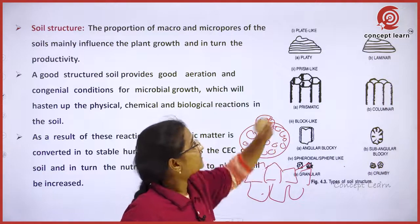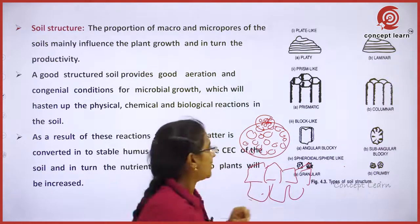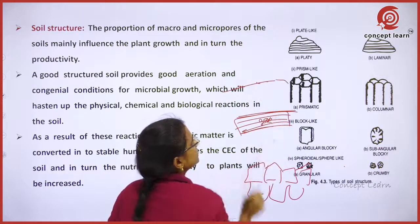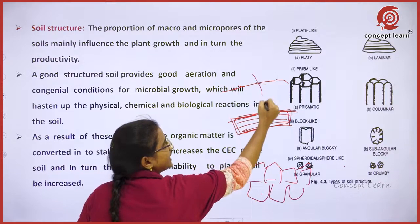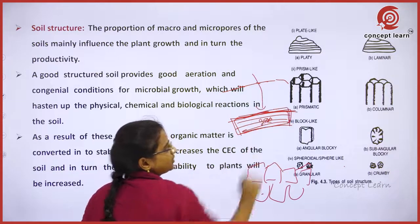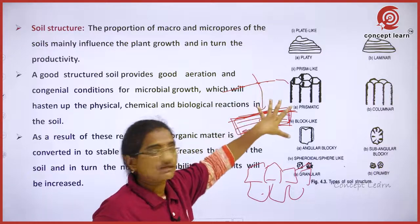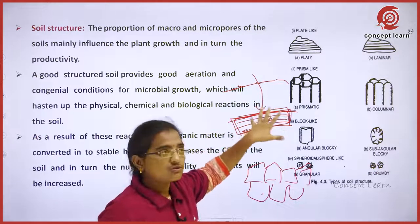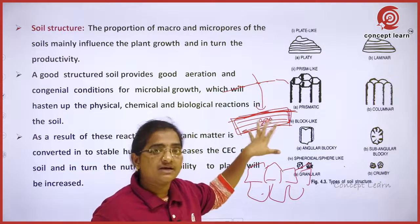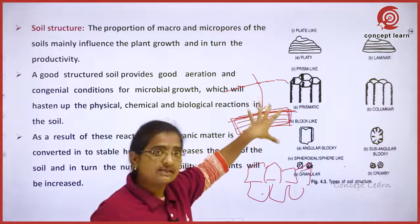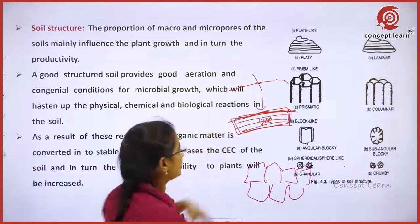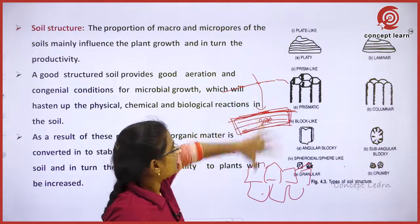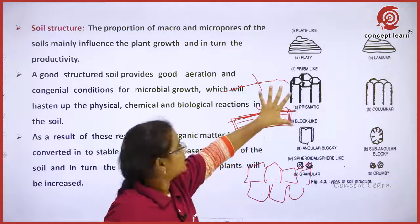In case of platy structure, the particles are arranged like flat plates. Whatever water we apply, it will stagnate at the surface. Effective rooting depth also decreases — roots can only grow up to within that plate layer. So the effective absorption capacity of the plant decreases. Water holding capacity of the soil also decreases.